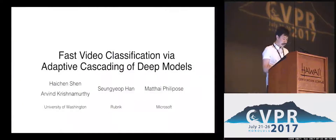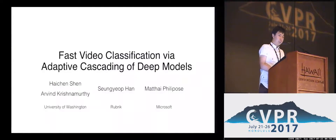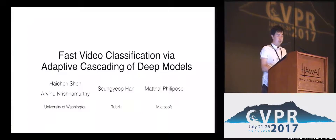Hello, everyone. I'm Hei-Cheng Shen from University of Washington. Today, I'm going to present our work, Fast Video Classification via Adaptive Cascading of Deep Models. This is a joint work with Sanyab Han, Matai Filippos, and Arvind Krishnamasi.